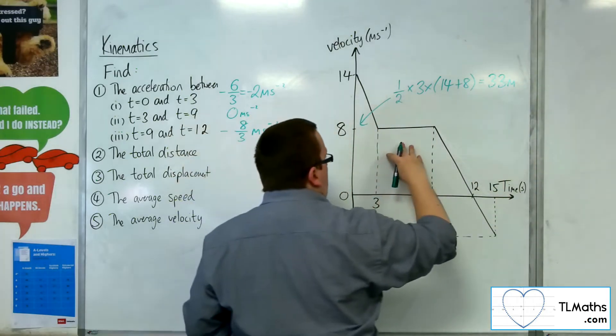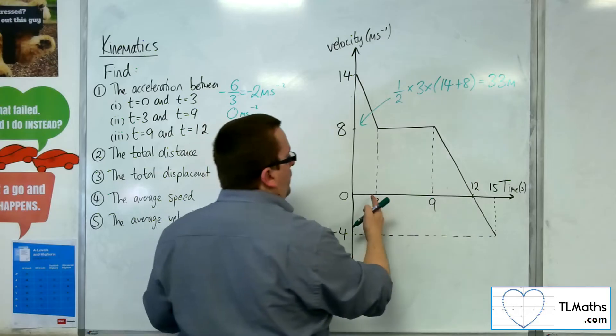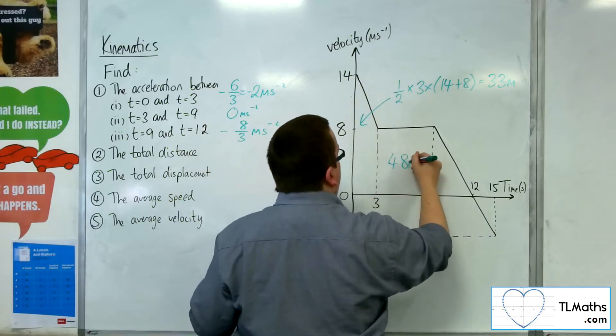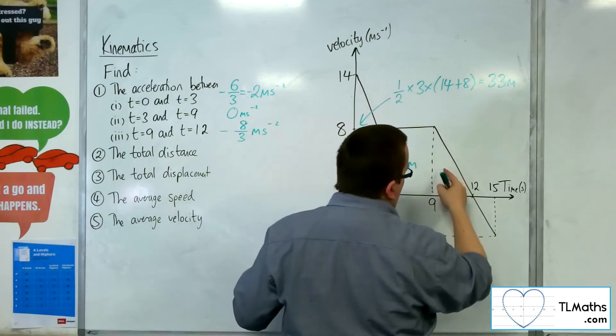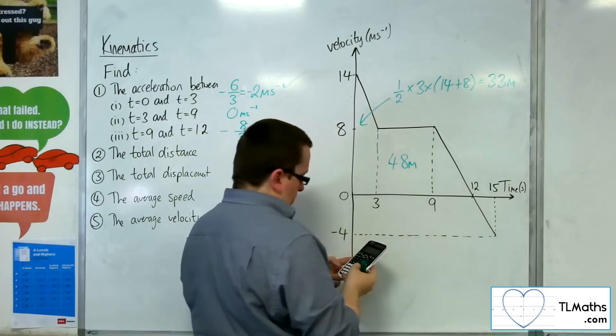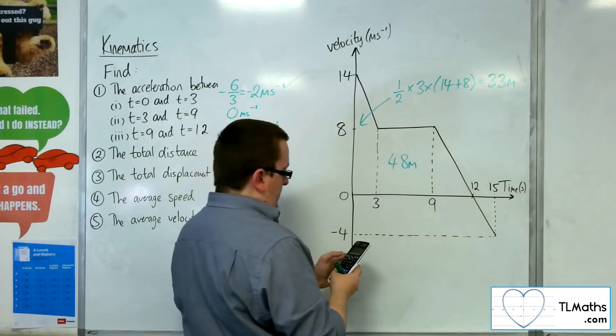Then for the rectangle that we've got here, we've got 6 times 8, so that's 48 metres in there. Then we've got a triangle, so half base times height, so half times 3, times 8, so 12.